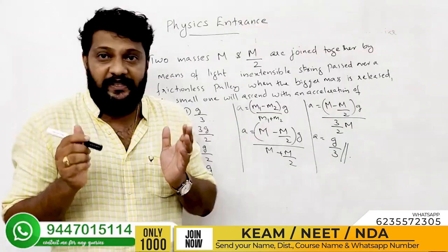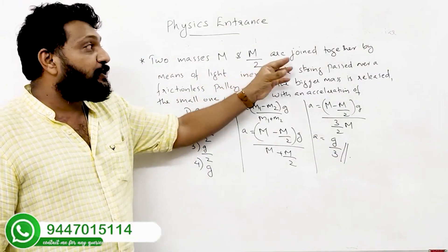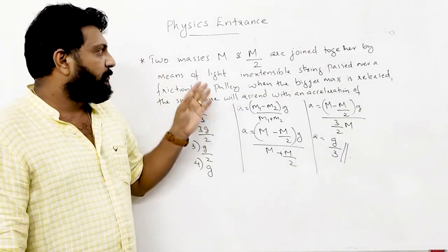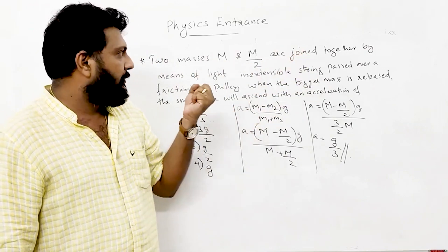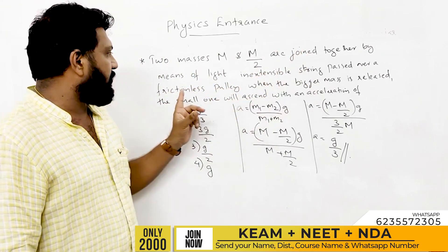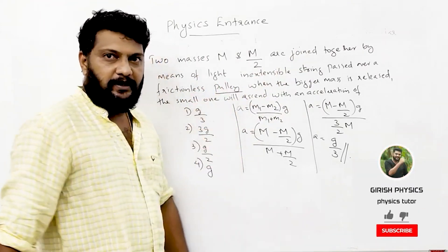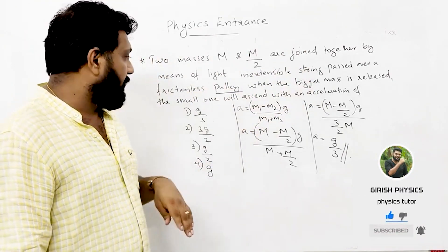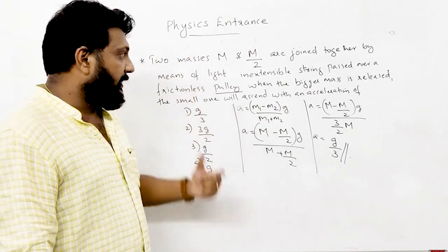The next question: two masses M and M2 are joined together by means of a light inextensible string passed over a frictionless pulley. When the bigger mass is released, the smaller one will ascend with an acceleration.